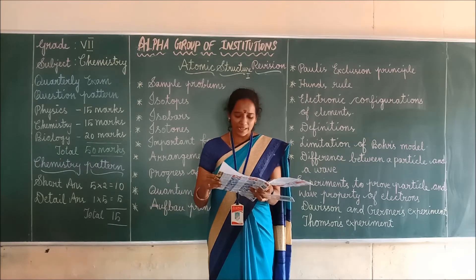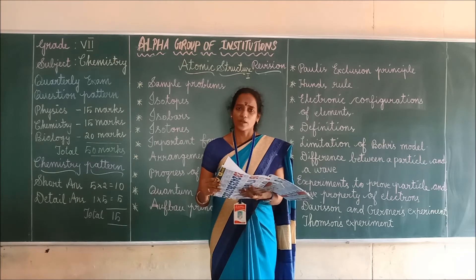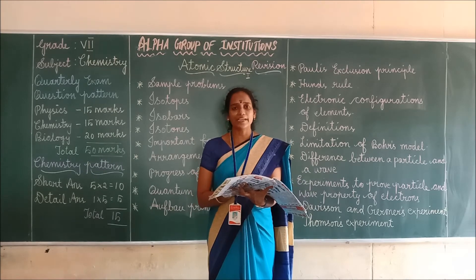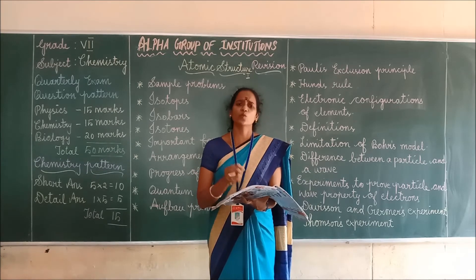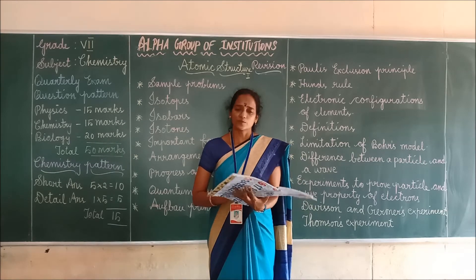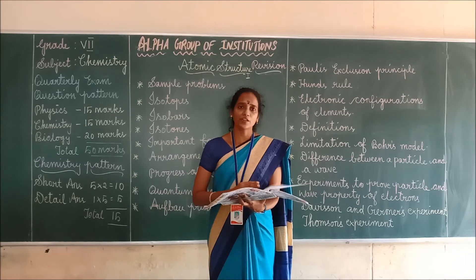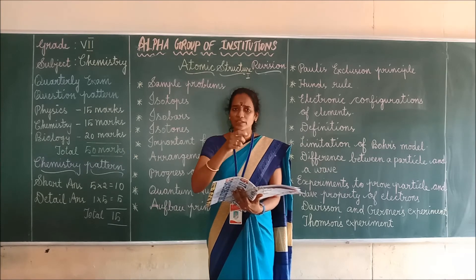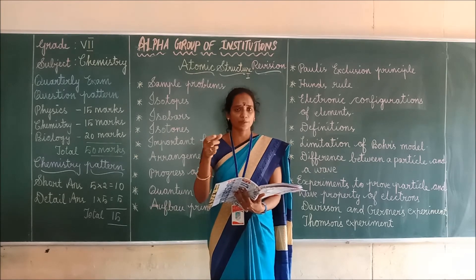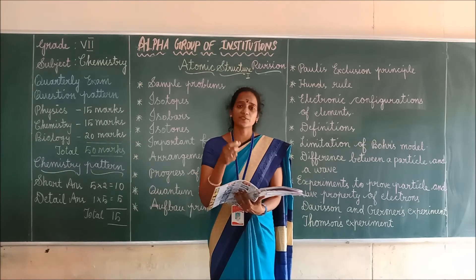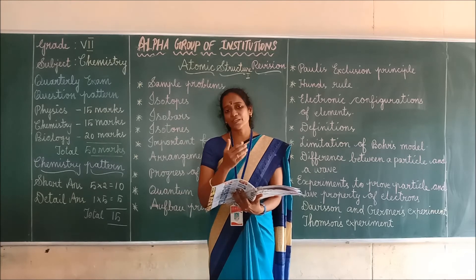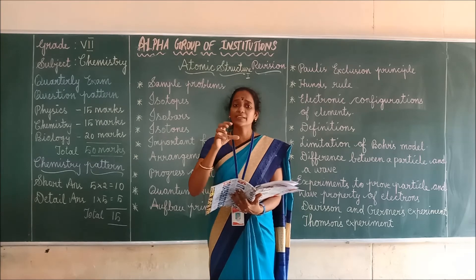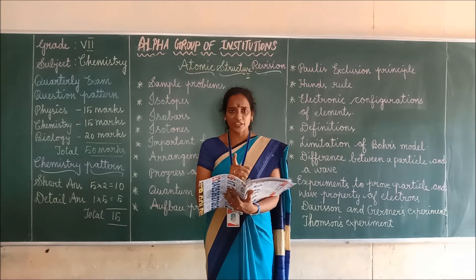Come to page number 11, quantum numbers. Quantum numbers are a set of integers used to define an electron completely in an atom. The four types are: principal quantum number, azimuthal quantum number, magnetic quantum number, and spin quantum number. Each quantum number describes something different — shape, size, orientation, or the angular momentum of the electron — and each has specific integral values that you should also mention.